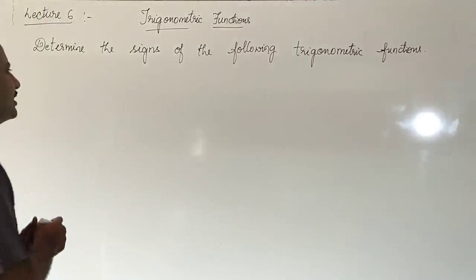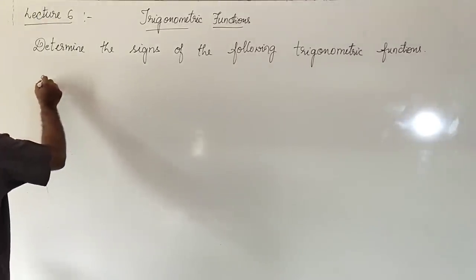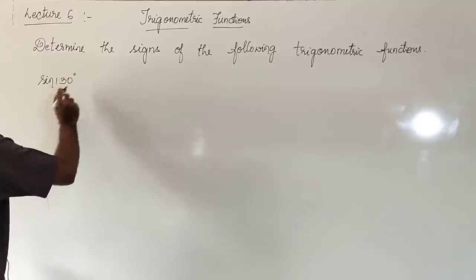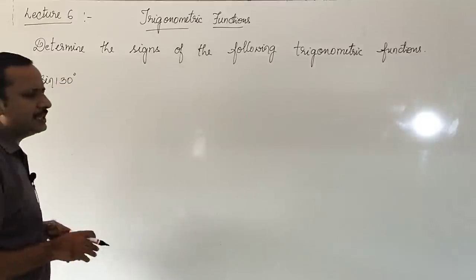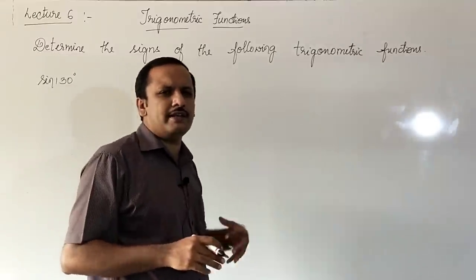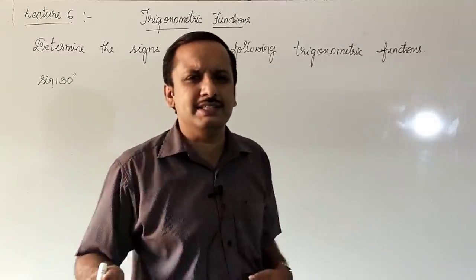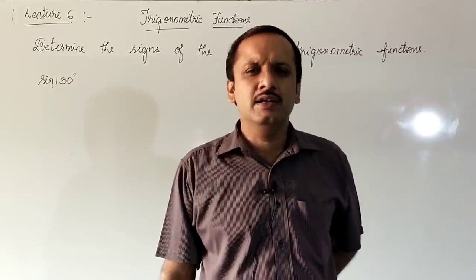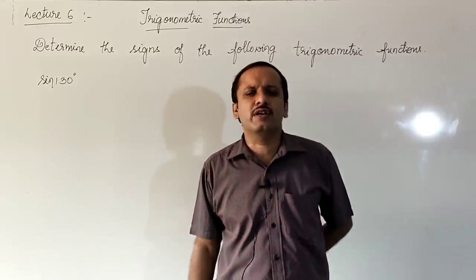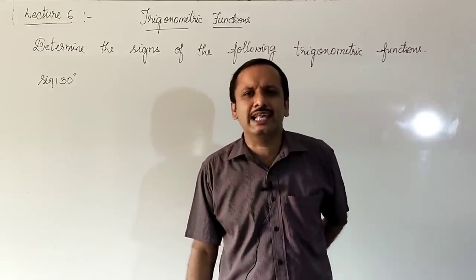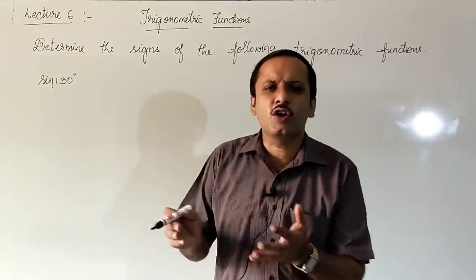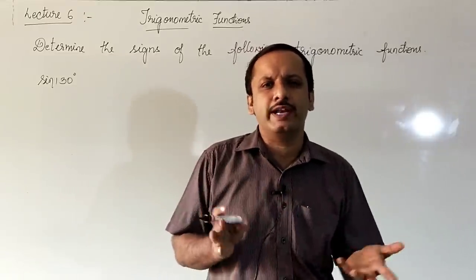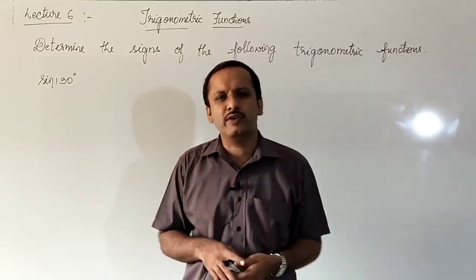First one: sign of 130 degrees. To solve this, students, we have to first identify in which quadrant this angle lies, and then for that given trigonometric function in that quadrant, whether it is positive or negative.